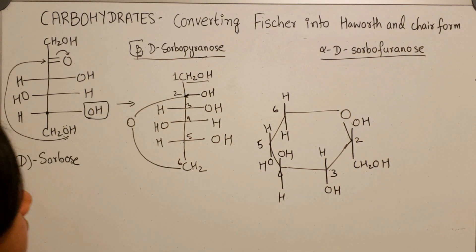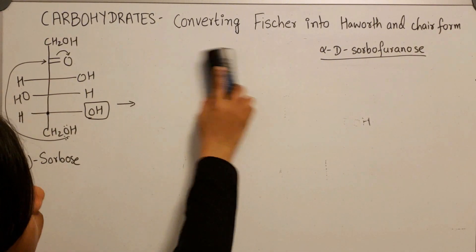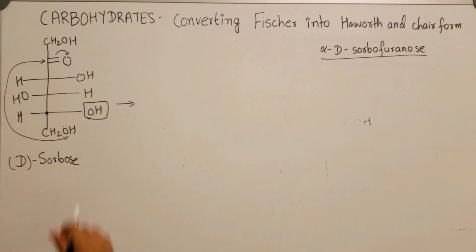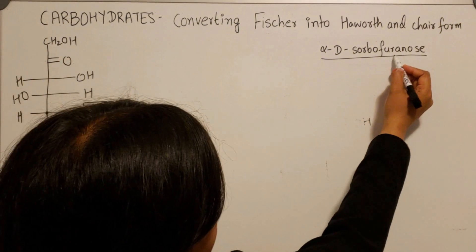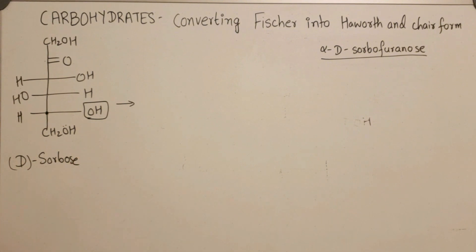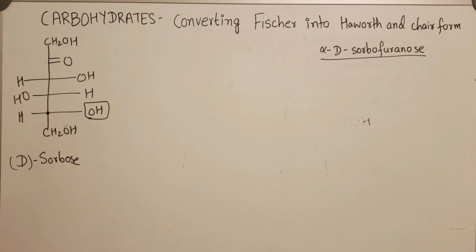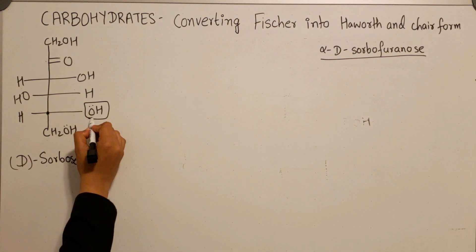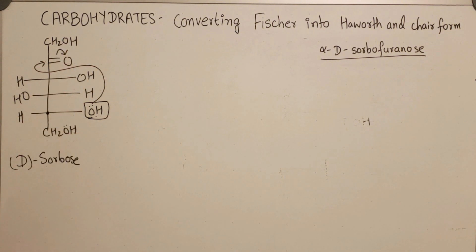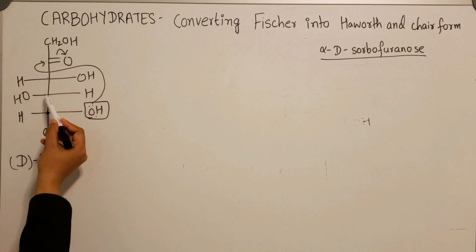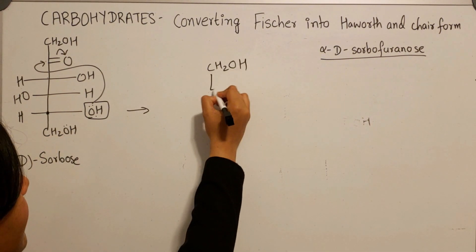That's the answer to the first question. Let's now draw the alpha-D-sorbofuranose form of D-sorbose. The question asks for the five-membered ring containing oxygen. Our first task is to determine which lone pairs on oxygen to use. Using these lone pairs to attack the electrophilic carbon generates a five-membered ring: one, two, three, four, five.